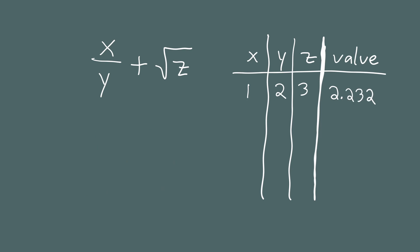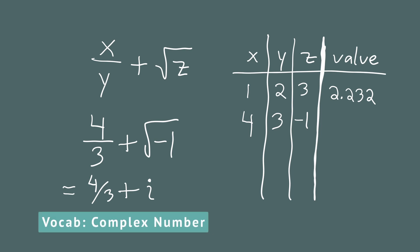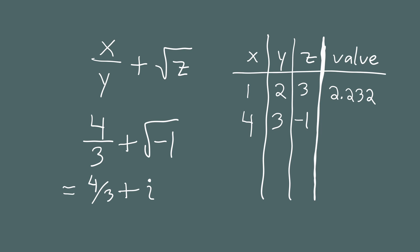Let's do one final calculation. We'll plug in 4 for x, 3 for y, and negative 1 for z. That gives us 4 divided by 3 plus the square root of negative 1. Now there's a rumor that you can't take the square root of a negative number — you totally can, the result is just a complex number. The square root of negative 1 is a number called i, which is an imaginary number. So we get four thirds plus i, which is a complex number.